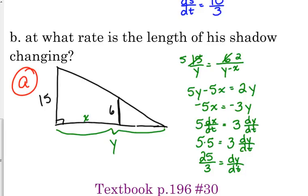...side as Y, and then I already labeled this right here as X - the distance between the man and the pole. So when we set up the similar triangles here, we have the vertical distance over the big horizontal distance: 15 over Y is equal to the smaller vertical distance 6...